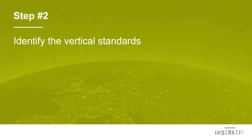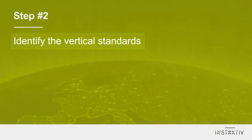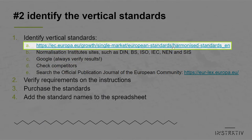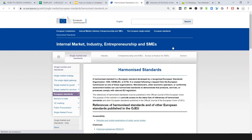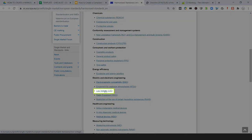In step two we're going to identify the vertical standards. Go to the same page of the European Commission and click on the product groups that apply to your product.